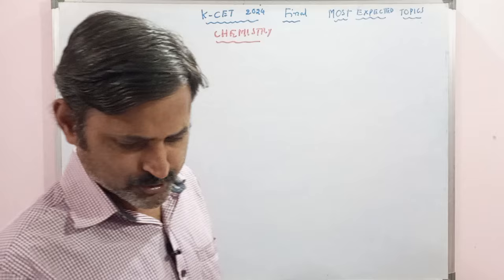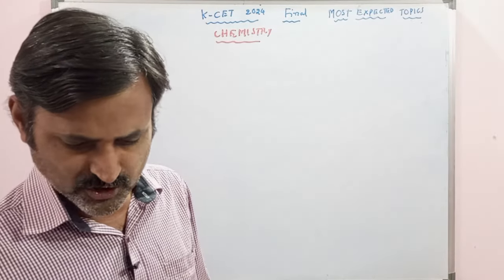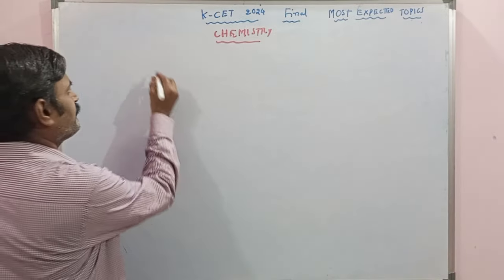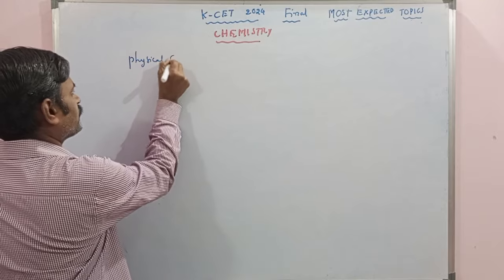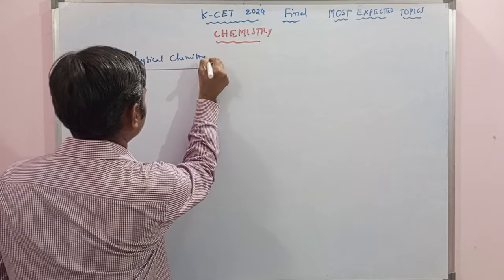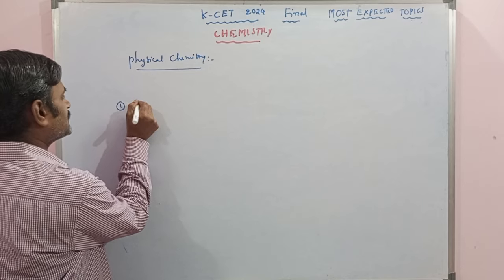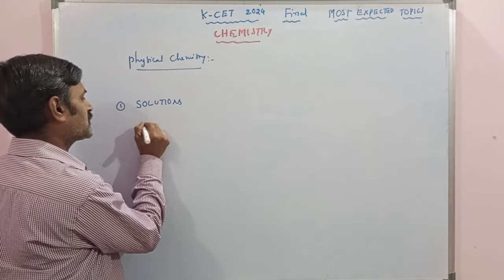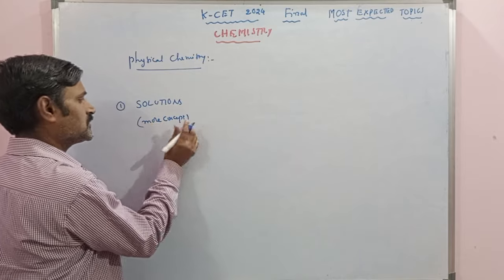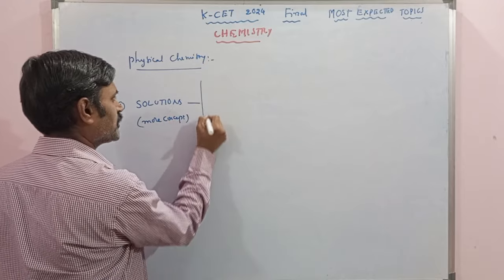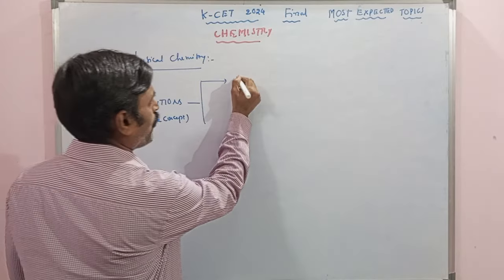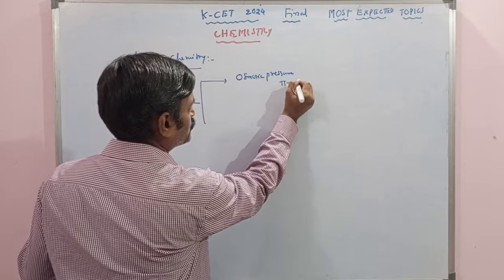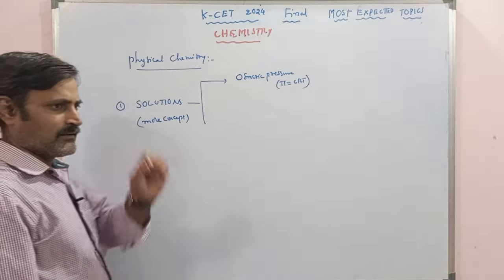Many of you have come across different types of question papers with interesting questions asked from physical chemistry. First I would like to discuss about physical chemistry related topics. In physical chemistry, one topic you can select is the solutions chapter. The solution chapter is connected with mole concept also. In this, 100% we are going to get questions related to colligative properties, particularly osmotic pressure related questions — the π = CRT formula based questions. 100% chances are there.